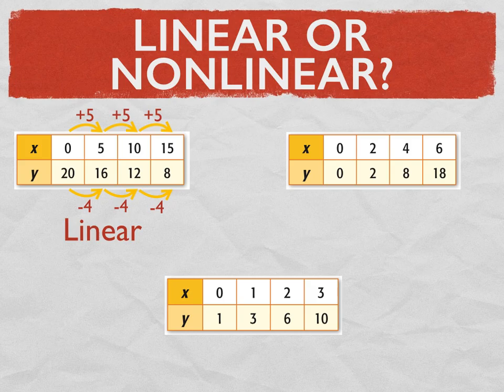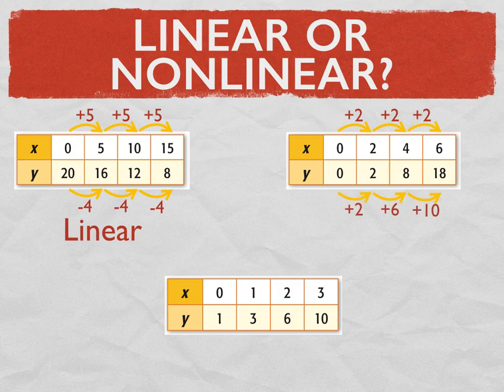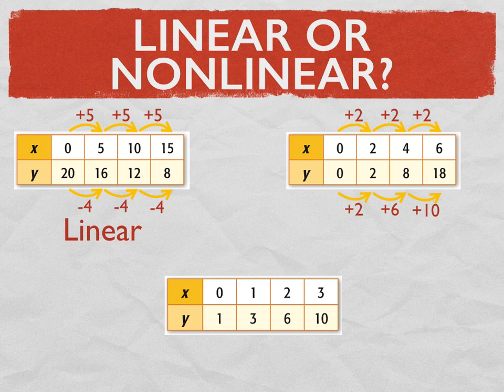If you look at the next table, the x values are increasing by 2 each time. And the y values, if you notice, first it increases by 2, then it increases by 6, and then it increases by 10. So while the x values are increasing at a constant rate of 2, the y values are not increasing at a constant rate because it goes up by 2, then up by 6, then up by 10. So this is nonlinear.